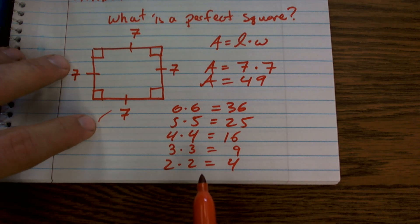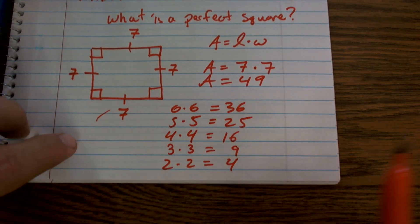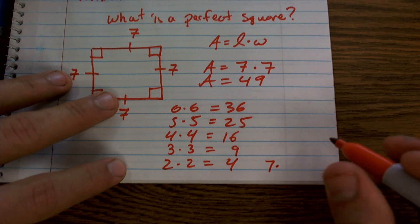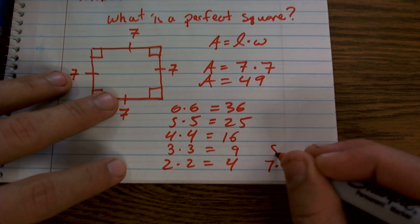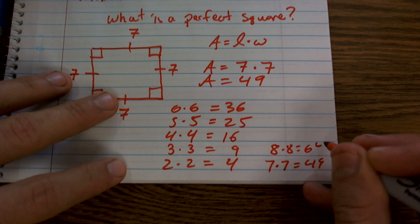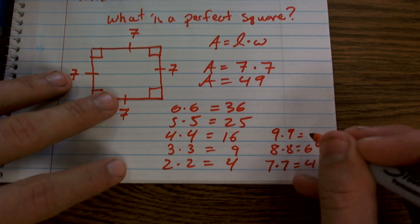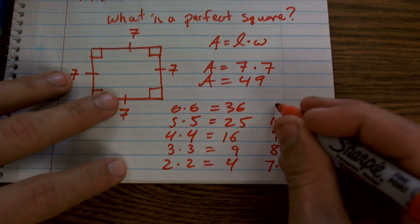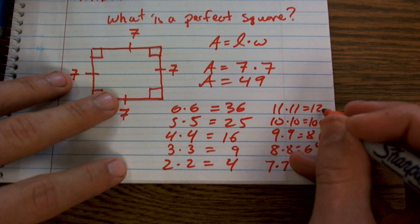And my advice to you is to be able to go up as high as you can to at least 15. Seven times seven is 49. Eight times eight is 64. Nine times nine is 81. Ten times ten is 100. Eleven times eleven is 121.